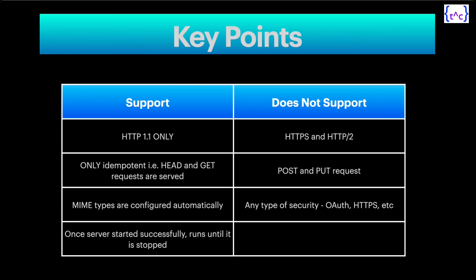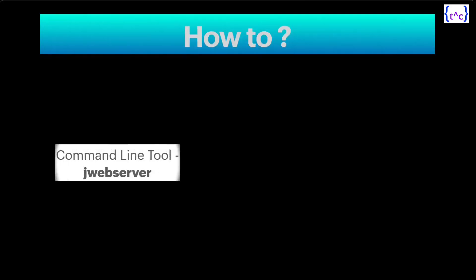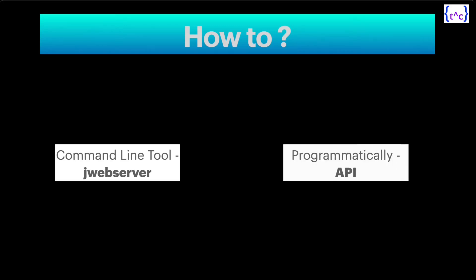Now let's look at the ways this server can be implemented. The first technique is the command line tool — once you install Java 18, inside the bin directory you will find the jweb server tool. If you want to use it via a program, you have the API method, where you can programmatically start the server for specific needs.